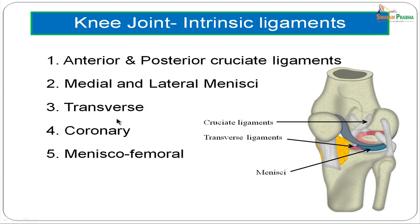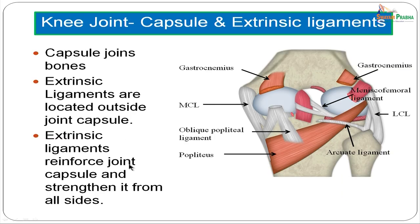The intrinsic ligaments, located within the joint cavity, include the anterior and posterior cruciate ligaments, the medial and lateral menisci, the transverse ligament, the coronary ligament, and the meniscofemoral ligaments. Now we will look at the capsule and the extrinsic ligaments. The capsule is a fibrous structure joining the bones, and extrinsic ligaments are located outside the joint capsule, reinforcing and strengthening it from all sides.